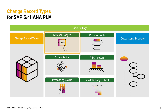One of the first points is to set up a number range. The change record number ranges are defined in another customizing table. The mapping between the change record type and the number range then happens in the change record customizing table, which I will show later in the demo.